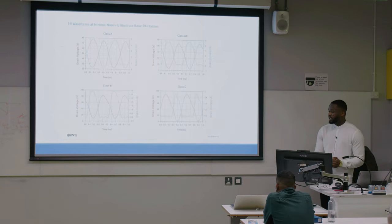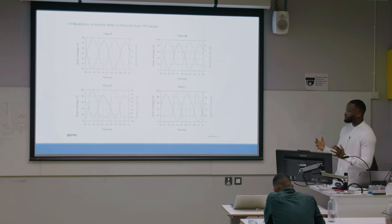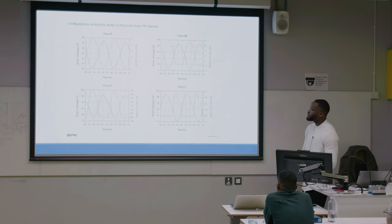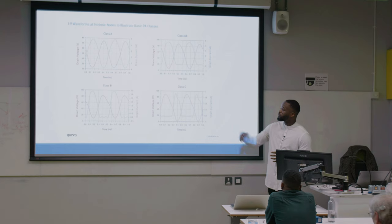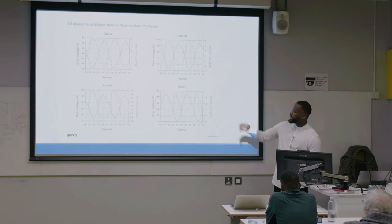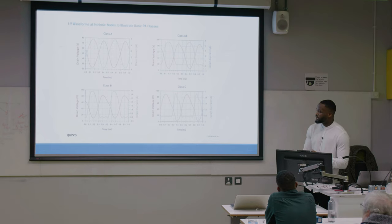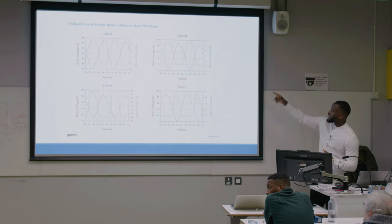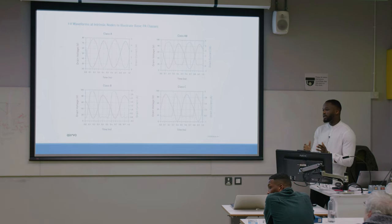Here I've got waveforms of the different classes of amplifier. Class A is basically linear because the output is not distorted. Class B is clipped — half of the cycle is amplified while the other half is clipped. Class AB operation sits between the two.